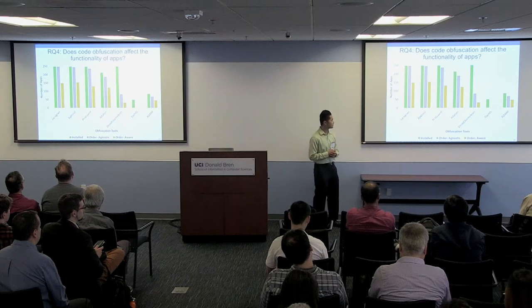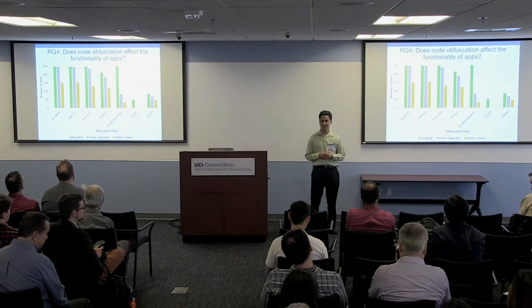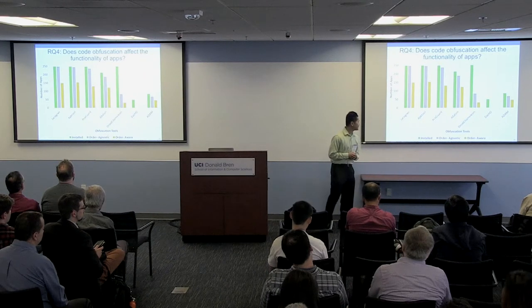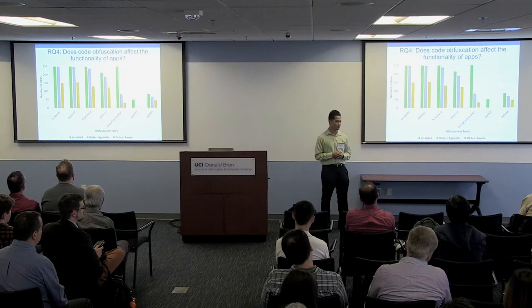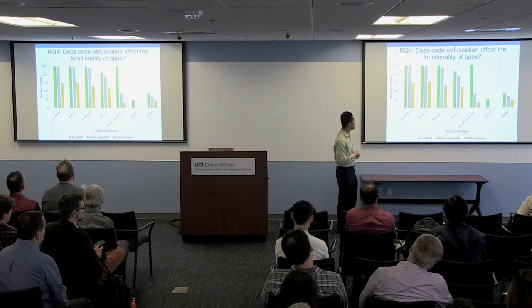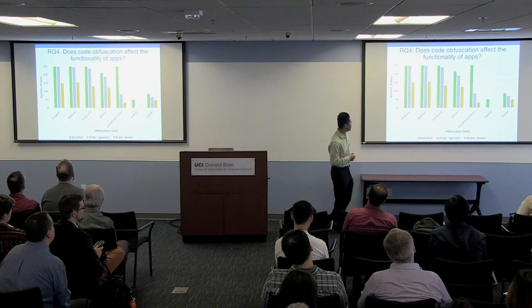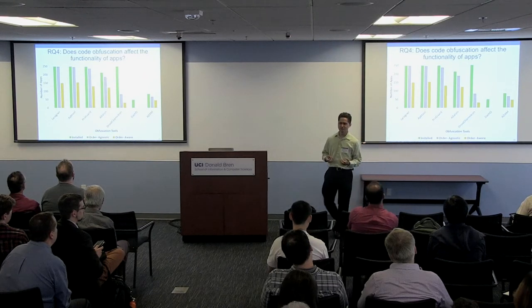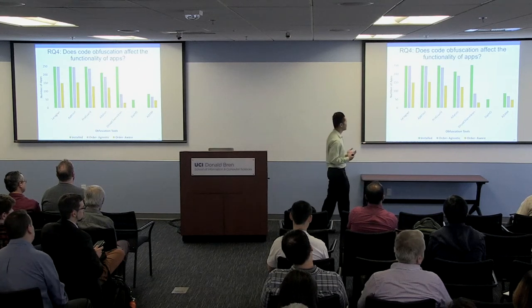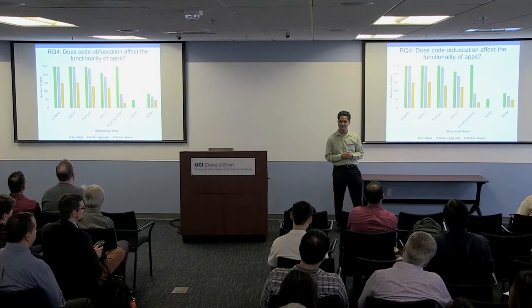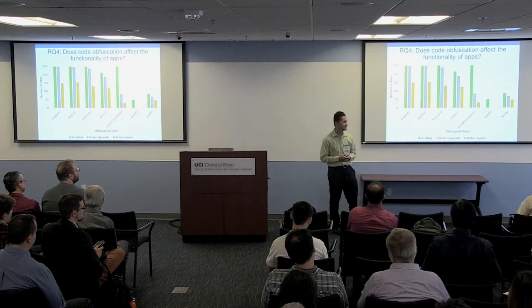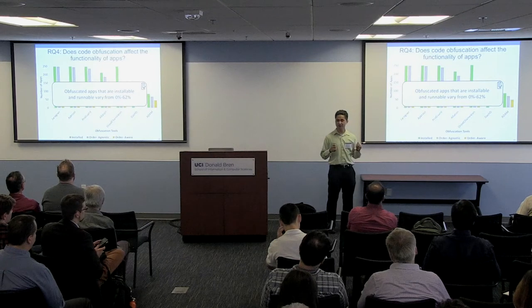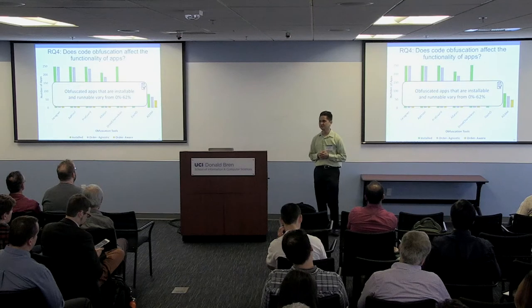We tested these obfuscation tools using 250 apps. A good number of tools can produce nearly all apps as installable. However, when we look at runability — similarity of behavior before and after obfuscation — we see reductions. Tools like Jarsigner, APKTool, and ProGuard still do well in an order-agnostic fashion. But for order-aware behavior, none of the tools produced more than 150 out of 250 apps that exhibited order-aware runnable behavior. Overall, obfuscated apps were only runnable and installable in 0% to 62% of cases.